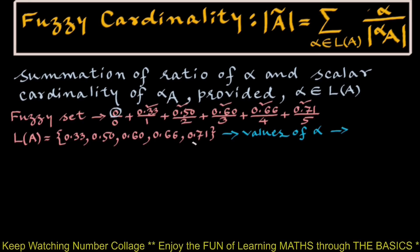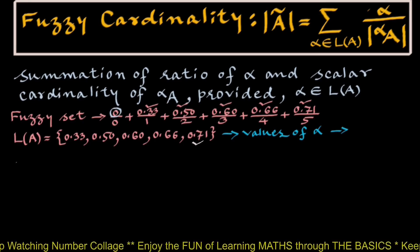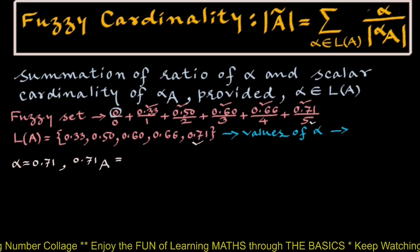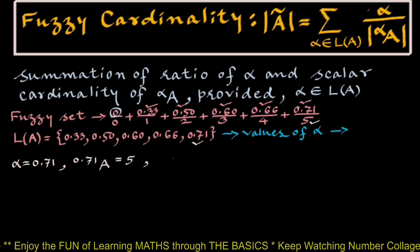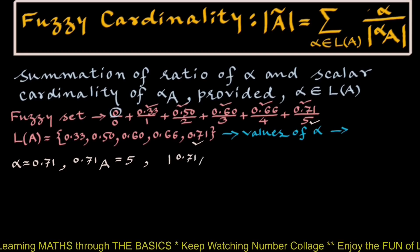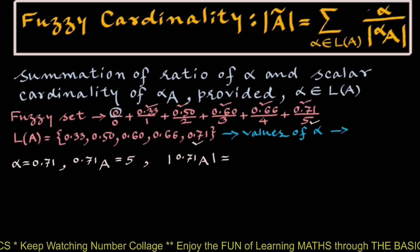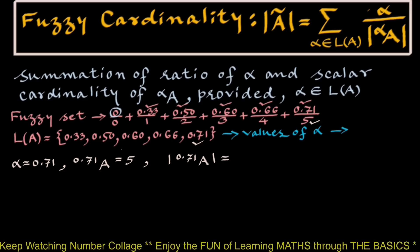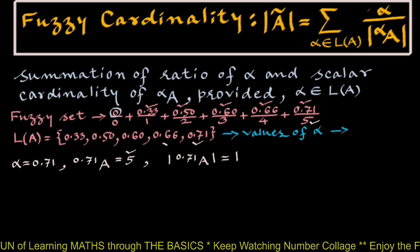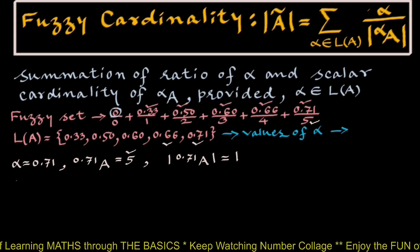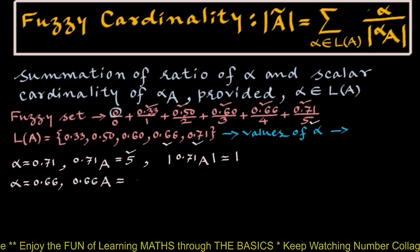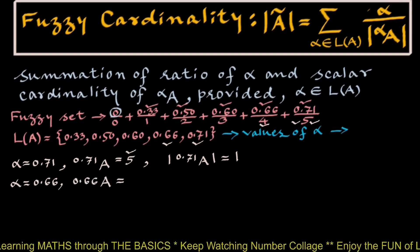First, for alpha equals 0.71, the 0.71-cut A will be the one element {5}, and scalar cardinality of 0.71-cut A equals 1. Next, for alpha equals 0.66, the 0.66-cut A will contain elements {4, 5}.